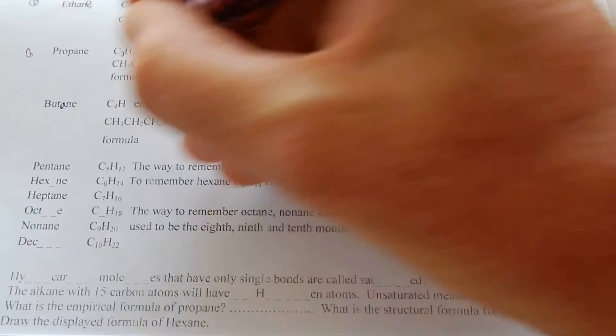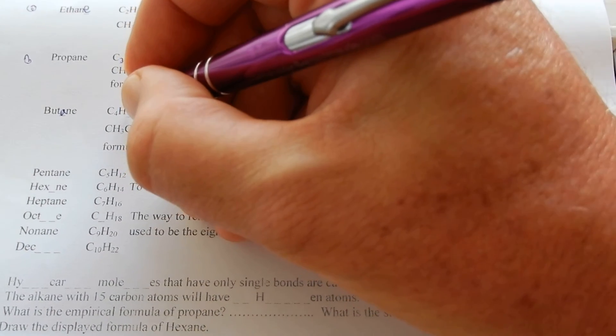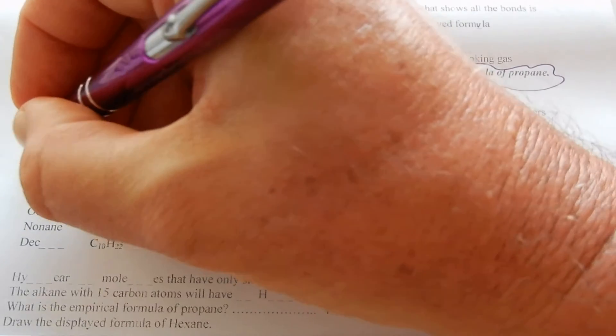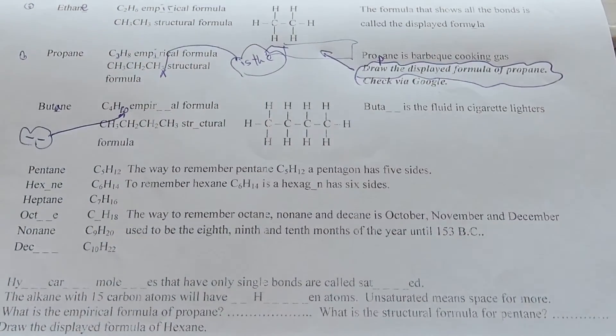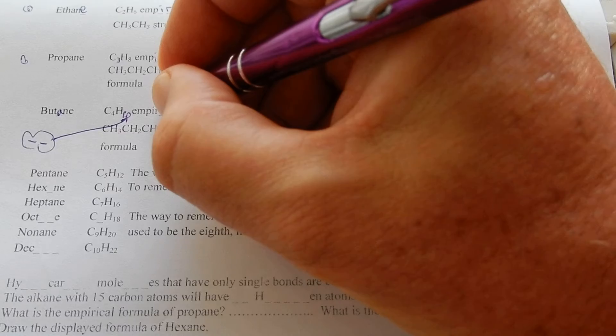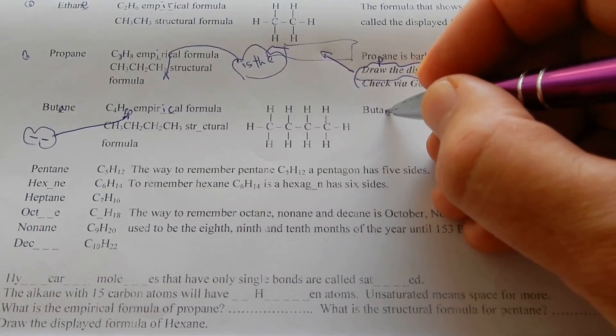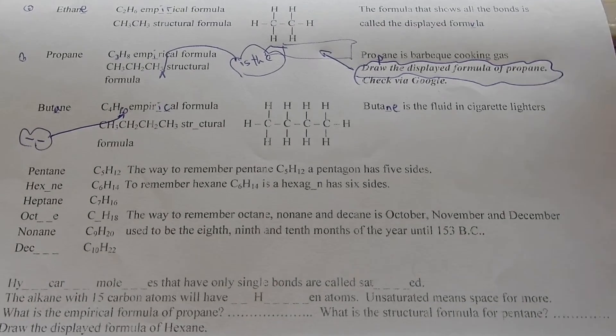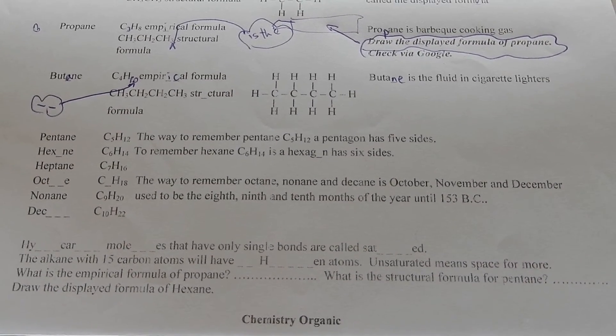Butane, empirical formula C4H10. Butane is fluid in cigarette lighters and barbecues.